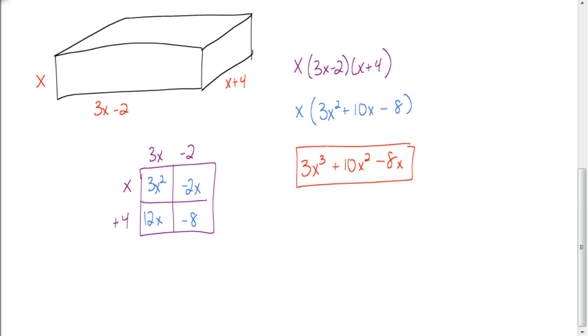Okay, so let's see how you did. You should have gotten 3x cubed plus 10x squared minus 8x as your answer. Now, you could have done that a couple of ways.